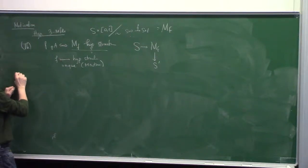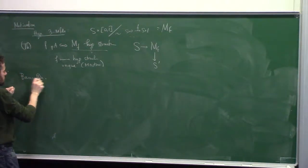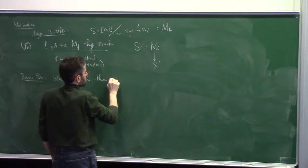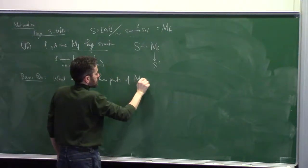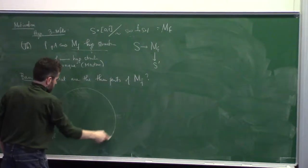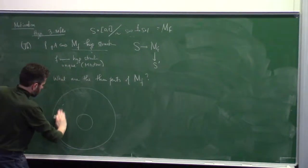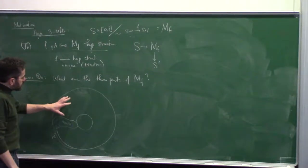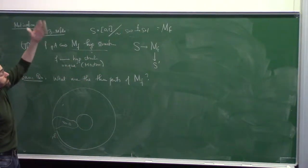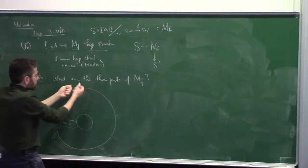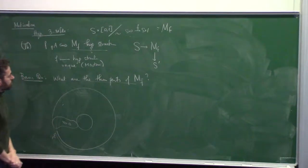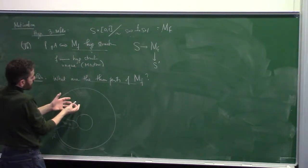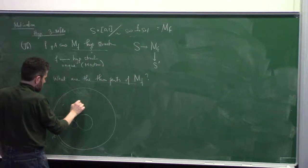You could ask, as a basic question which turns out to be central to the discussion: what are the thin parts of Mf? Let me draw a little cartoon. Mf is a three-manifold that fibers over the circle and the fiber is a surface, so the surface goes around in a circle. It has a thick-thin decomposition, just like a surface does, except it's a three-dimensional thick-thin decomposition.